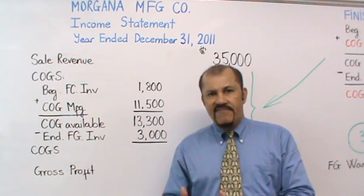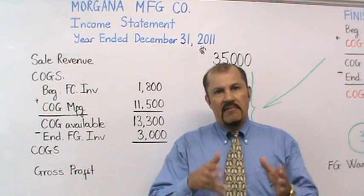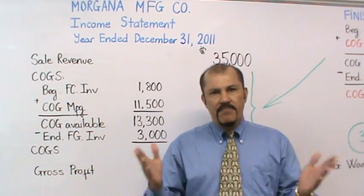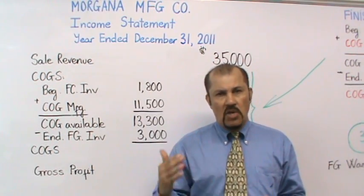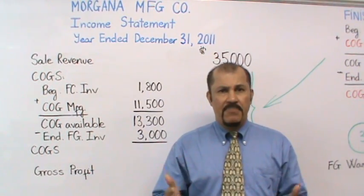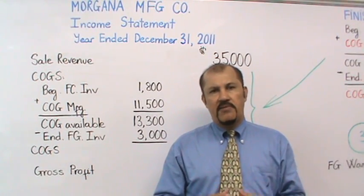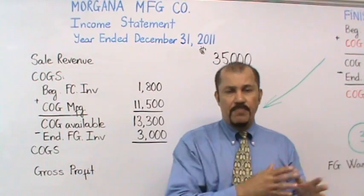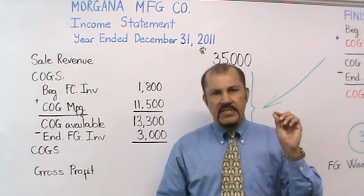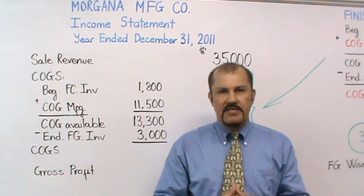This is quite different from your period costs. Your period costs, if you recall, are expensed at the time you incurred them. A period cost is a non-factory related cost. For example, your president's salary, or the controller's salary, or rent on your office building — these would all be examples of period costs. And these period costs would be expensed in the period in which they were incurred.